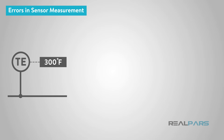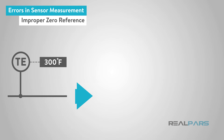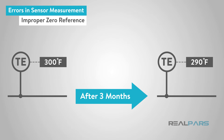First, the instrument may not have a proper zero reference. Modern sensors and transmitters are electronic devices, and the reference voltage or signal may drift over time due to temperature, pressure, or change in ambient conditions.